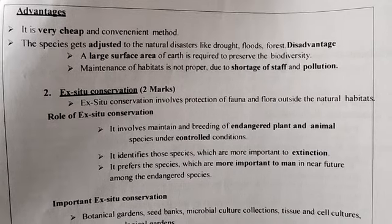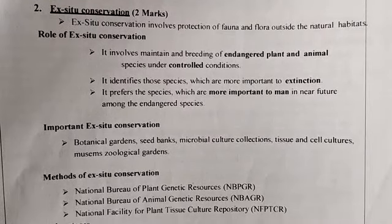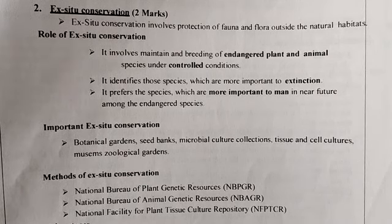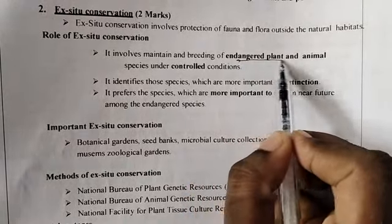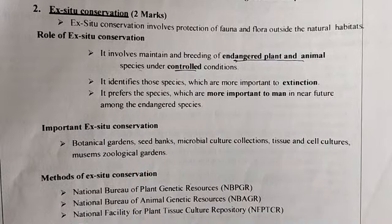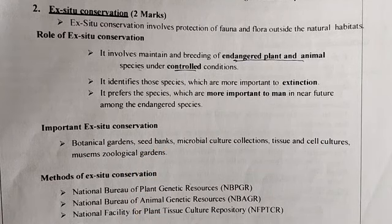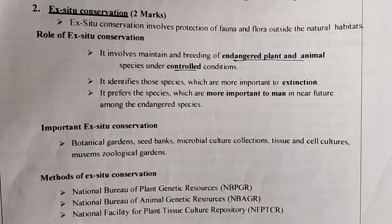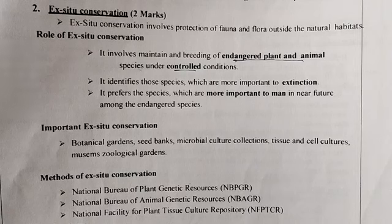Next, ex-situ conservation — the conservation or protection of flora and fauna outside the natural habitat. Its role is to maintain and breed endangered plants and animals under controlled conditions. It identifies which organisms are extant and conserves them, and preserves species most important to humans among the endangered species. Important ex-situ conservations include botanical gardens, seed banks, microbial culture collections, tissue and cell cultures, museums, and zoological gardens.